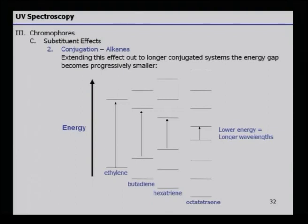Extending this effect to longer conjugated systems, the energy gap progressively becomes smaller and smaller. Ethene has a bigger energy gap than butadiene, then hexatriene, and so on. These pictorial descriptions and numerical values make it clear that the more conjugated the system, the higher will be the wavelength and the lesser energy will be required, because the HOMO-LUMO gap is becoming smaller and smaller.